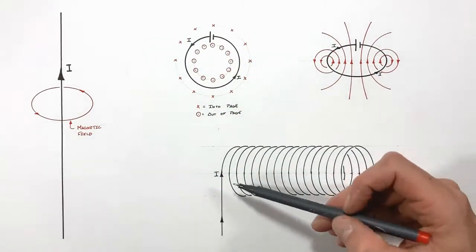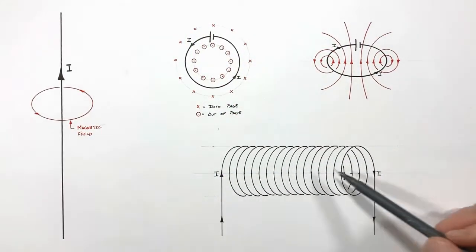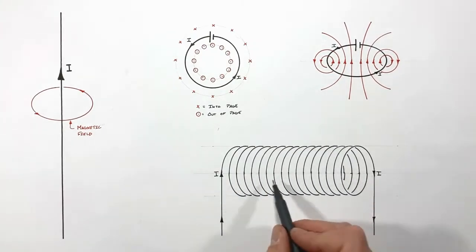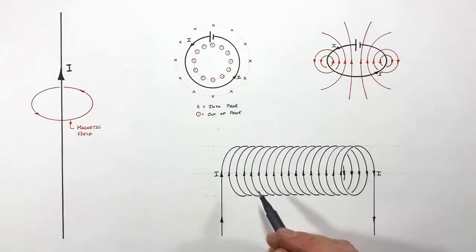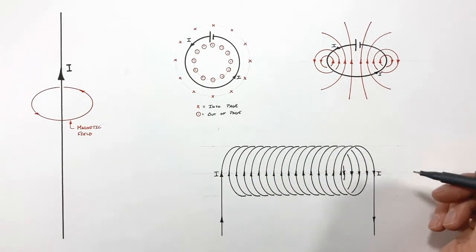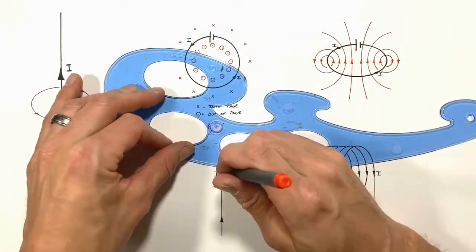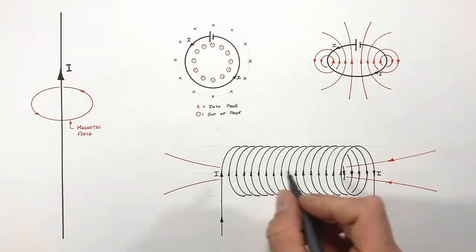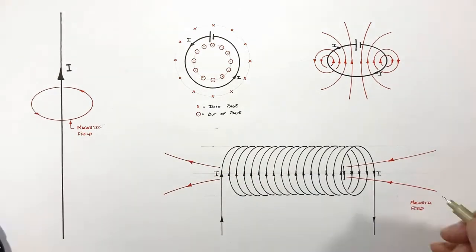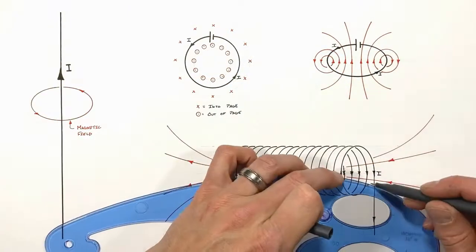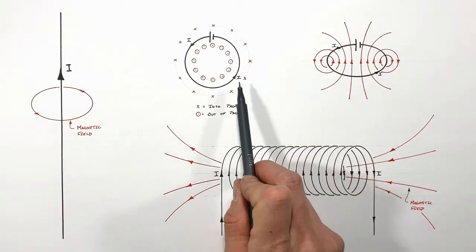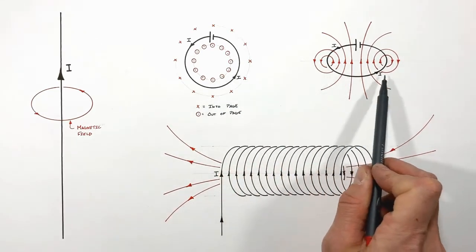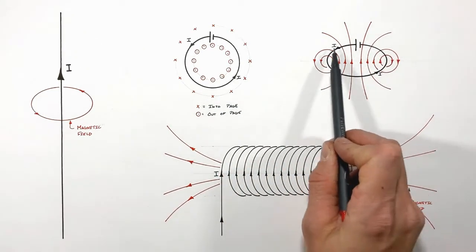A solenoid is nothing other than a whole bunch of loops of wire all wound together with current passing through that wire. By running current through all the wire in a solenoid, that solenoid will produce a magnetic field which in this case is to the left. It's not really any different than the magnetic field which was produced by a single loop of current-carrying wire.